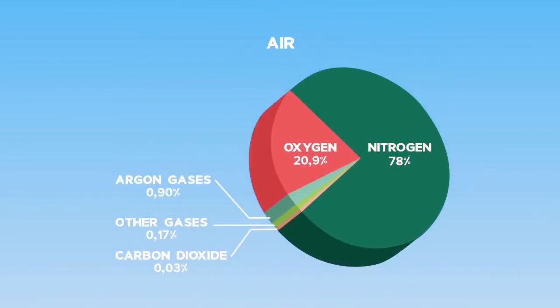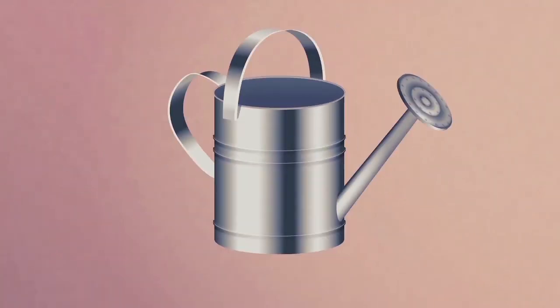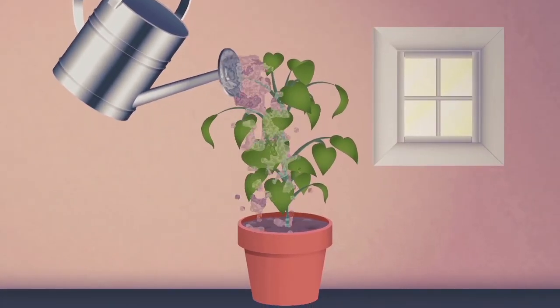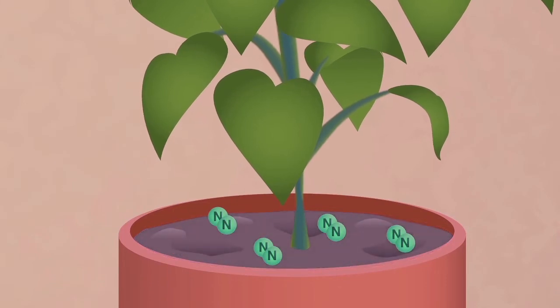But wait, nitrogen is over 78% of the air. Why couldn't plants use that? It turns out that nitrogen doesn't dissolve in water and that's a problem. Plants are mostly water and get all of their nutrients by absorbing it into the leaves or through their roots. Nitrogen just doesn't go in.